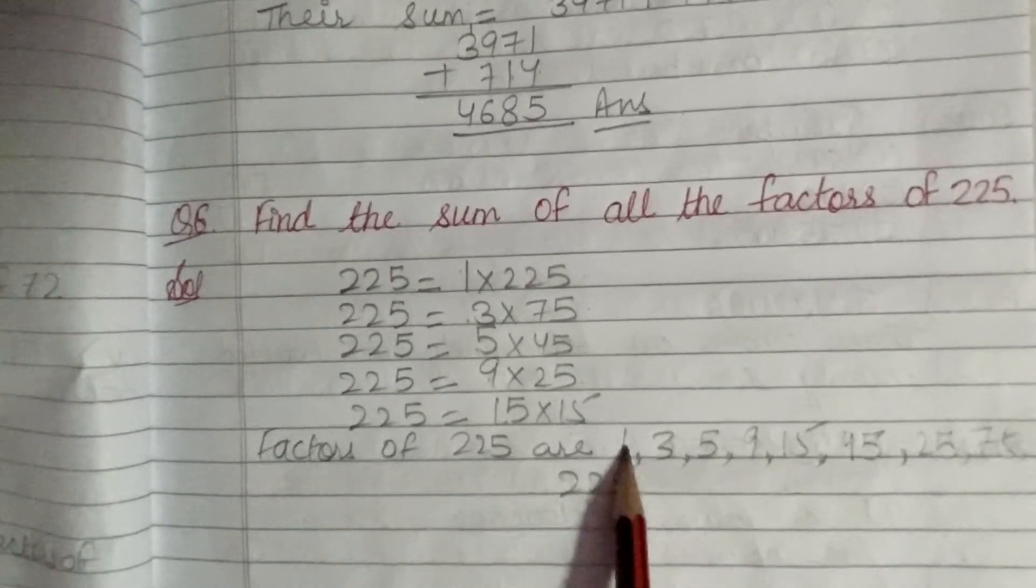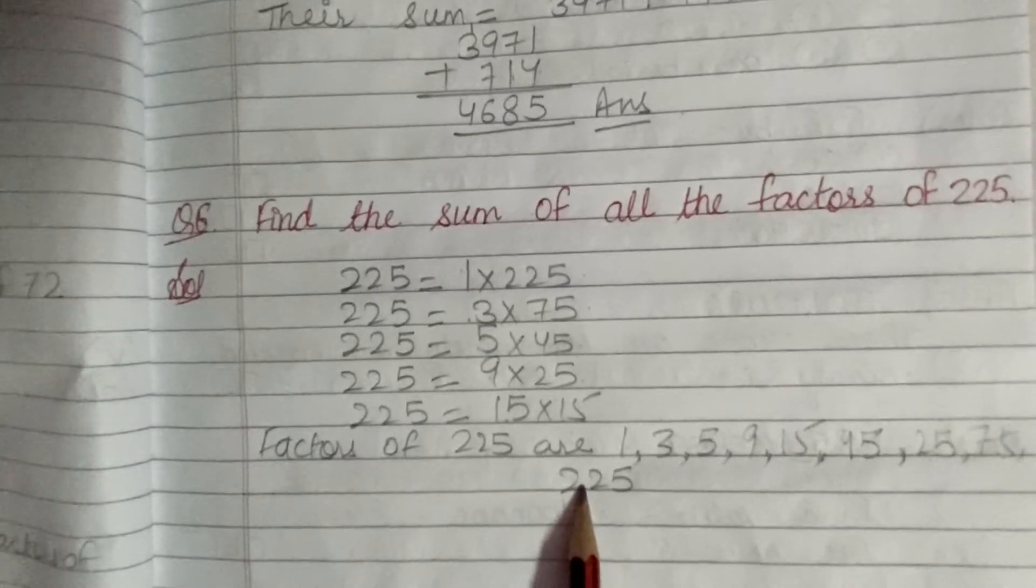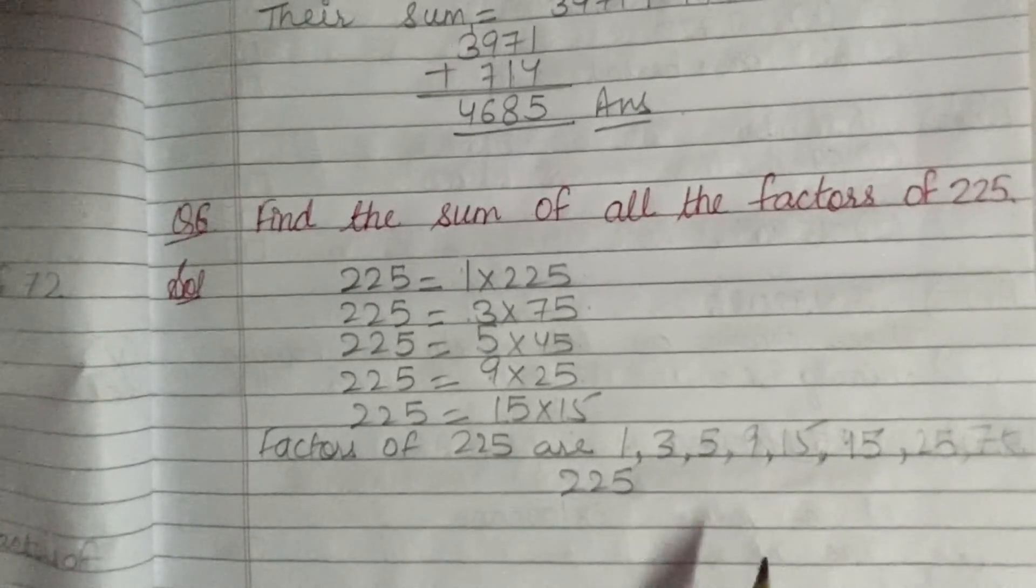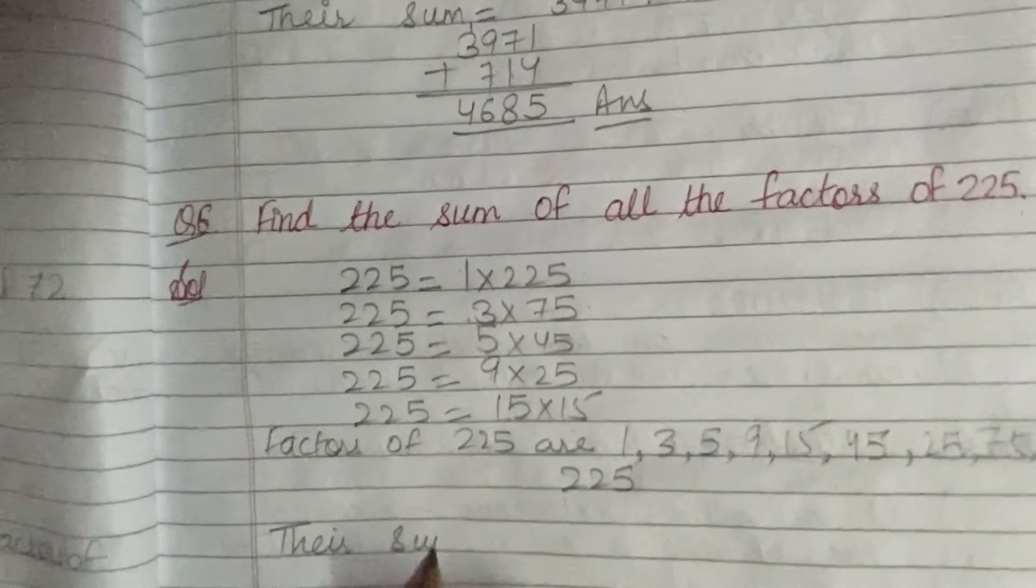So how many factors are there? 1, 2, 3, 4, 5, 6, 7, 8, 9. There are 9 factors. Now I want to find out their sum. Add them.